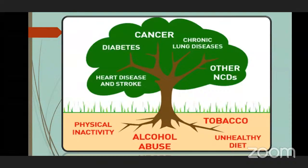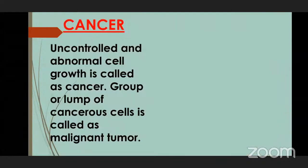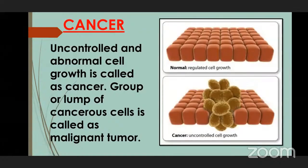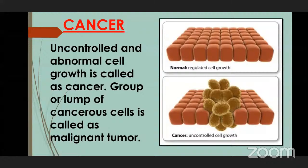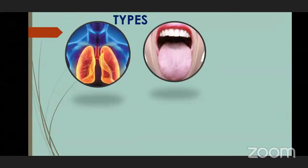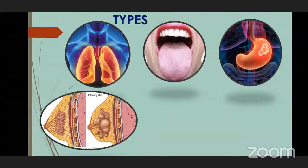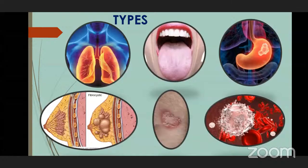So many people are suffering from cancer — recently Sanjay Dutt was also diagnosed with cancer. Cancer is uncontrolled and abnormal cell growth in the body. In a normal cell, growth is regulated. In cancer, there is uncontrolled cell growth — the cells grow uncontrollably, becoming cancerous cells, lumps, and tumors. There are many different types of cancer: lung cancer, mouth and tongue cancer, stomach cancer, breast cancer, skin cancer, and blood cancer.